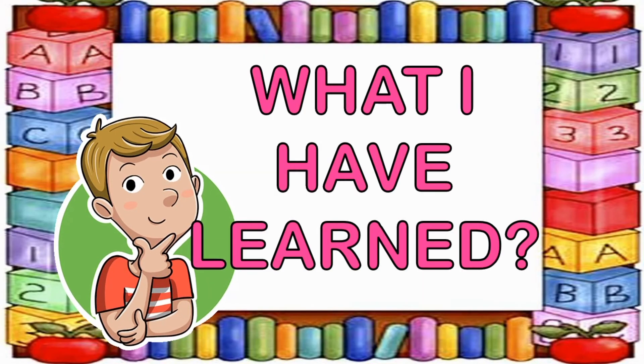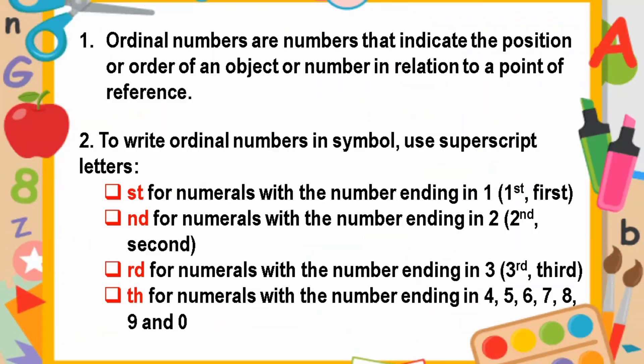Now let us proceed to What I Have Learned. What are the things to remember? Ordinal numbers are numbers that indicate the position or order of an object or number in relation to a point of reference. To write ordinal numbers in symbols, use superscript letters: ST for numerals ending in 1, ND for numerals ending in 2, RD for numerals ending in 3, and TH for numerals ending in 4, 5, 6, 7, 8, 9, and 0.